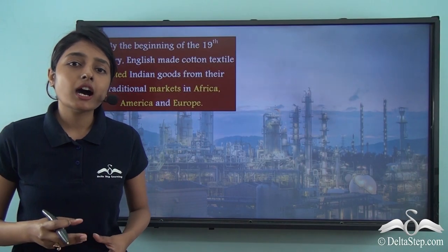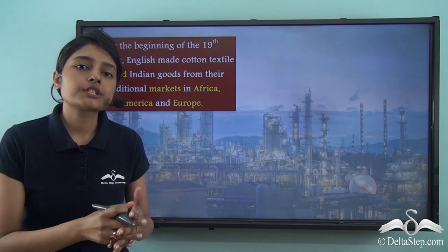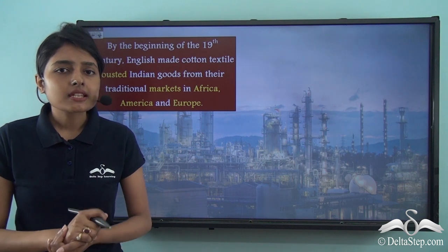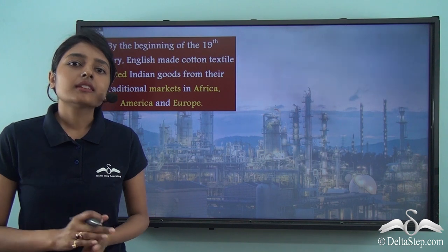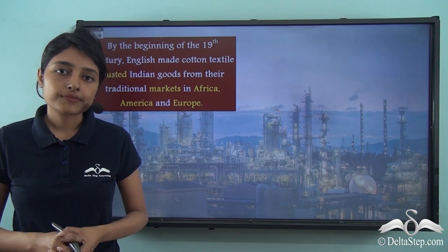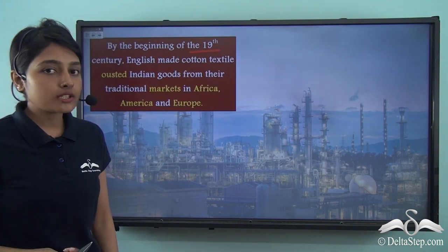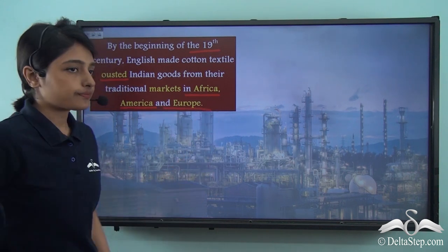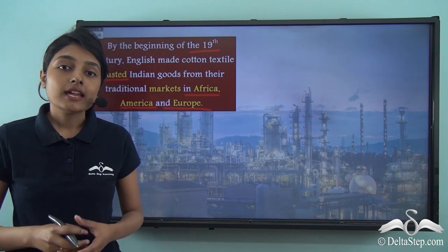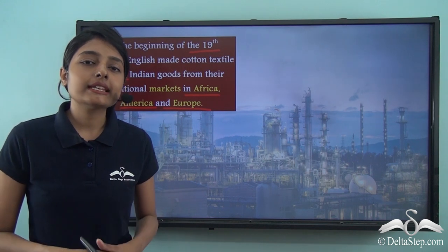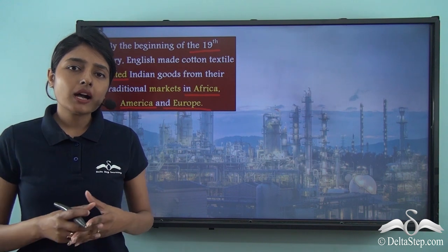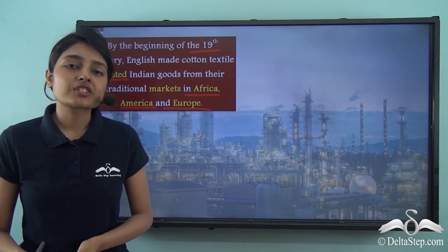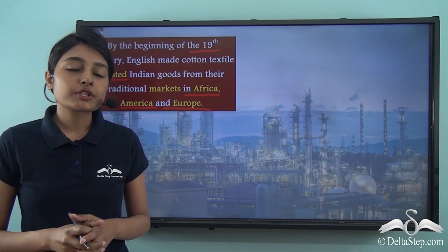In our last lesson we talked about how the growth of Indian textiles happened at a particular point of time when the East India Companies were promoting the sale of Indian textiles in the European markets. But subsequently, due to the effects of the industrial revolution, the demand for Indian textiles slowly started falling. By the beginning of the 19th century, English-made cotton textile ousted Indian goods from the traditional markets in Africa, America and Europe. All these European markets were looking for the profit of their own textile industries, which is why they were trying to oust the Indian textile producers from this scenario.